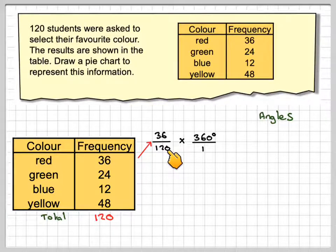360 divided by 1. And then we'll see if we can do any cancelling. Well, 120 goes into 360 exactly three times. Now because we've got 1 and 1 here, this 3 actually now means that one person is represented by 3 degrees on the pie chart.